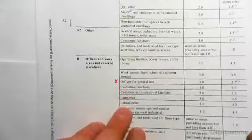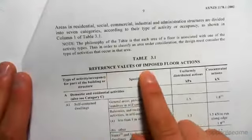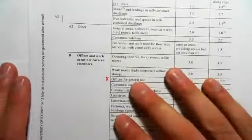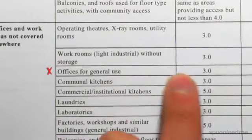So we look for that, and we have table 3.1 is reference value for imposed actions, floor actions. So general office, we did this in the previous example, it was 3 kilopascals.